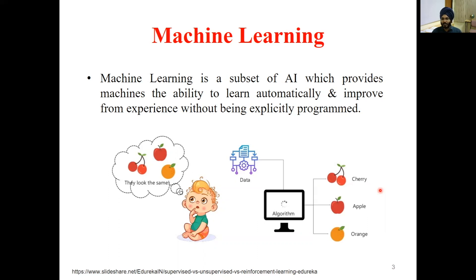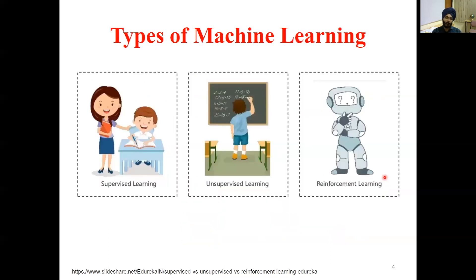So far, it is difficult to say that machines are able to do this work, because they need some data to be trained upon first. There are three basic types of machine learning. You can merge things together and create more, but the three standards are supervised, unsupervised, and reinforcement learning.